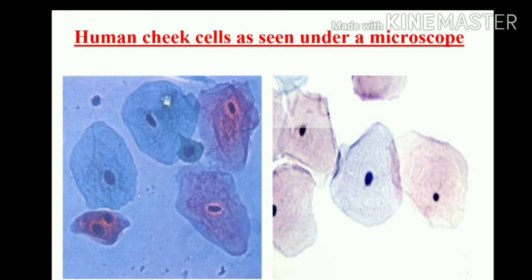How does a human cheek cell look as seen under a microscope? For this, you need to take a clean toothpick or a matchstick with the tip broken, scrape the inside of your cheek without hurting it. Place it on a drop of water on a glass slide. Add a drop of iodine and place a cover slip over it. Alternatively, add 1-2 drops of methyl blue solution. Observe it under a microscope.